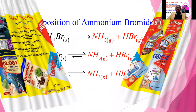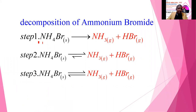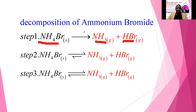Let me explain how dynamic equilibrium is achieved in a reversible reaction, using ammonium bromide as an example. In step one, at the very start of the reaction, we only have ammonium bromide — there are no products, no ammonia, and no hydrogen bromide. Therefore, only the forward reaction is proceeding. There is no backward reaction because at time zero we have no products that can combine to reform the reactants.